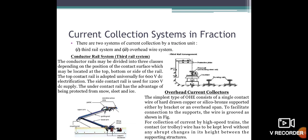The third rail system means the conductor rail system. You can see the figures. The conductor rail may be divided into three cases depending on the positions of the contact surface which may be located at the top, bottom, or side of the rail. The top contact rail is adopted universally for 600V DC electrification. The side contact rail is used for 200V DC supply. The under-contact rail has the advantages of being protected from snow, sleet, and ice.